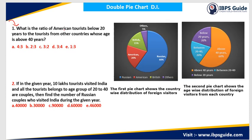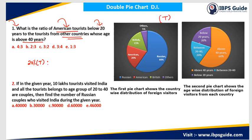Question 1: What is the ratio of American tourists below 20 years to the tourists from other countries whose age is above 40 years? We have to find the ratio between American tourists below 20 years. American tourists are 20% of the total number of tourists T. So 20% of T gives us the total number of American tourists, and below 20 years is 20%, so I have to take 20% of that to get the total number of American tourists below 20 years of age.